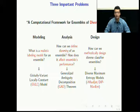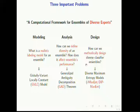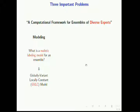In the modeling problem, the question is: what is a realistic labeling model for an ensemble? In the analysis problem, I want to ask how we can define the diversity of an ensemble and how does it affect an ensemble's performance? And in design, we want to know how can we methodically design diverse classifier ensembles. For the purpose of this talk, I will focus just on the first part, which is the globally variant locally constant, or the GVLC model.